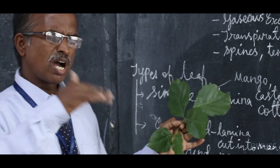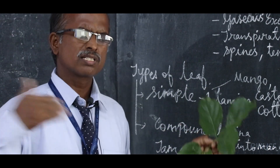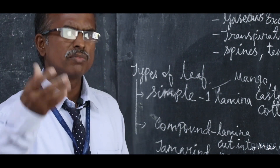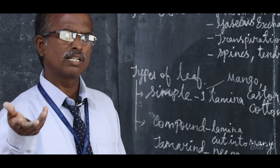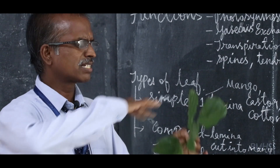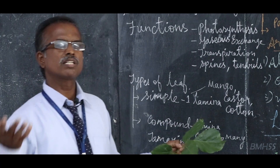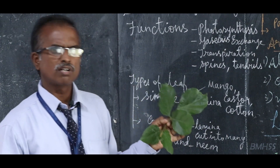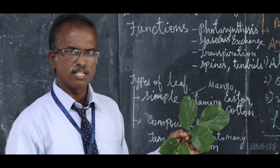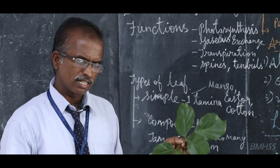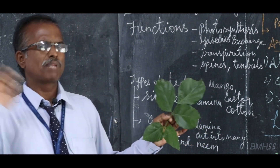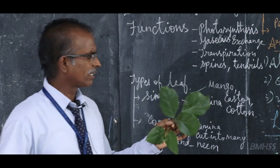Now, apart from this, some plants are non-green in colour. Some may be yellow in colour, red colour, or some other colour. Such patches will be there. Such a leaf is called a variegated leaf. A best example is the money plant.